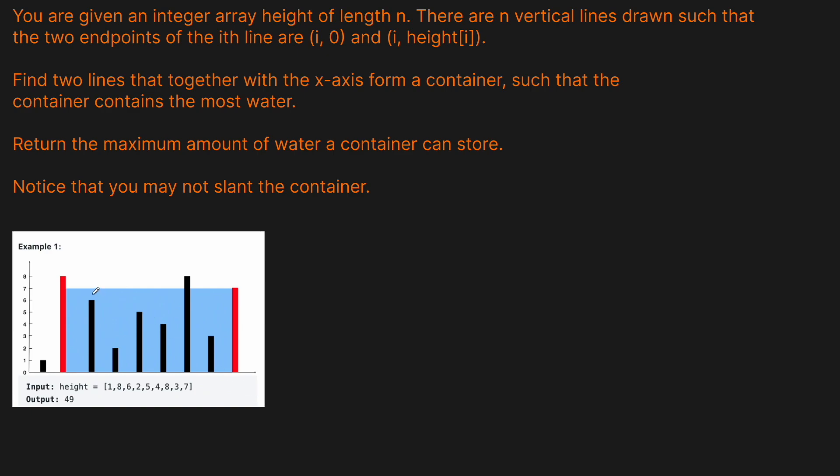So the amount of water we can store is basically going to be the area that we can make with the bars, right? So in our case, our solution is 49. Why? Because the distance between these two bars on this x-axis here is seven. And the height that bounds the container is seven. So obviously seven times seven is going to be 49, which is the best that we can do here.